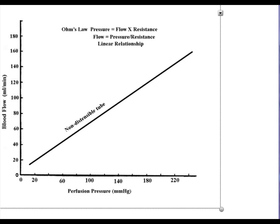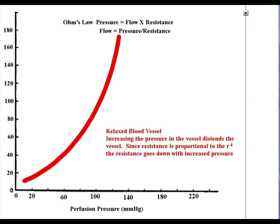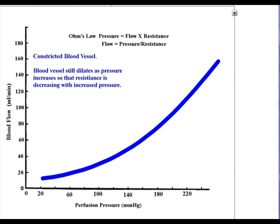If we look at Ohm's Law, it says that pressure is equal to flow times resistance. So as you increase the perfusion pressure, we have an increase in flow — that's assuming a fixed vessel that cannot dilate, like a lead pipe. But if we're dealing with a vessel that can dilate and constrict, the relationship changes. If the vessel is relaxed or totally dilated, flow increases readily. If the vessel is constricted, as we increase the pressure, the flow does not go up as much because the diameter is fixed or constricted.